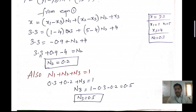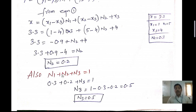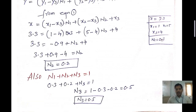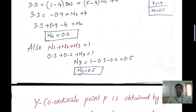Solving the equation gives n2 = 0.2. Now using the shape function identity n1 + n2 + n3 = 1, where n1 = 0.3 and n2 = 0.2: 0.3 + 0.2 + n3 = 1, so n3 = 1 − 0.5 = 0.5. The shape functions are: n1 = 0.3, n2 = 0.2, n3 = 0.5.